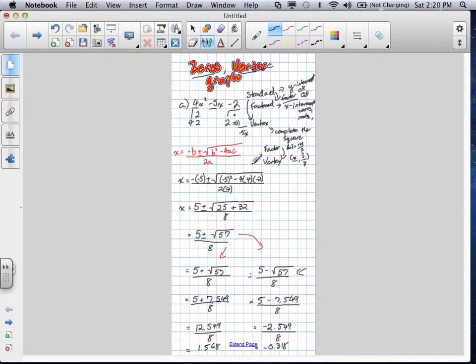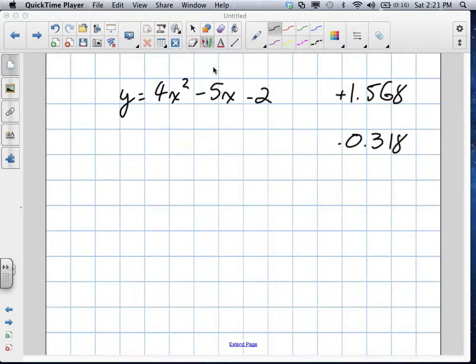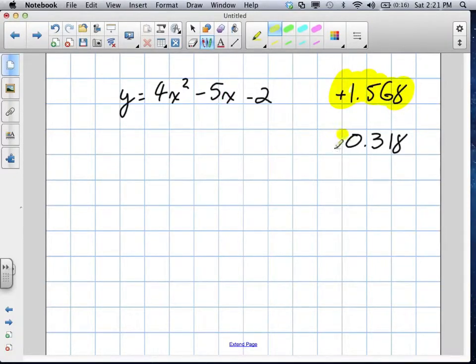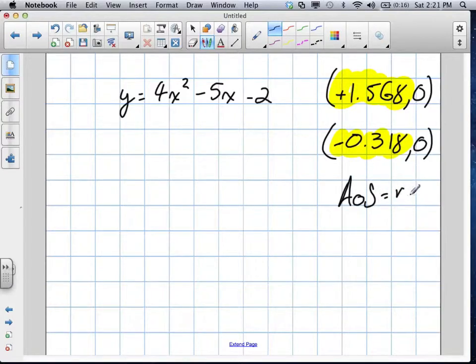One will be 5 plus root 57 divided by 8, and 5 minus root 57 divided by 8. Now, actually, these would be exact answers because we haven't gone about finding out exactly what the root is. Once we get the root, we're going to get some decimal number and we're going to end up rounding so it won't be exact. I'm not sure if your teacher wants them in exact values.